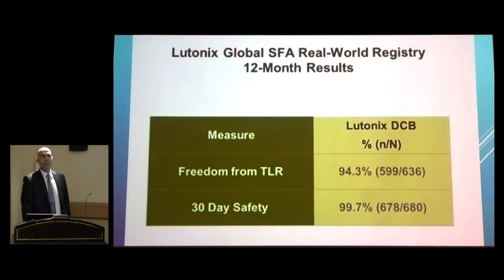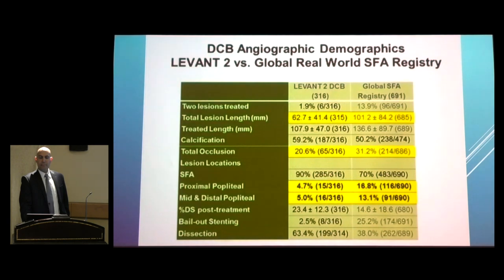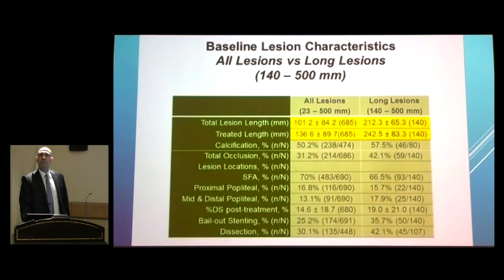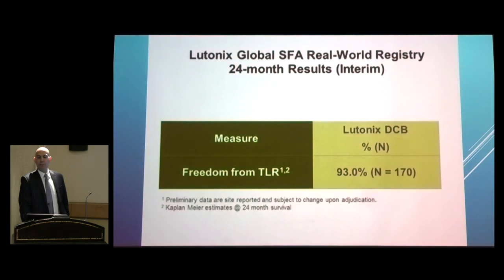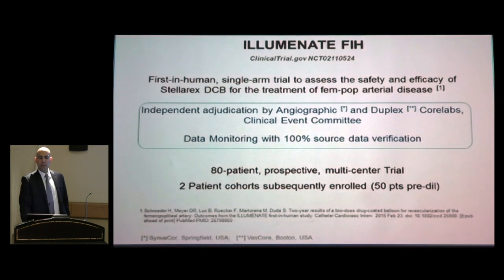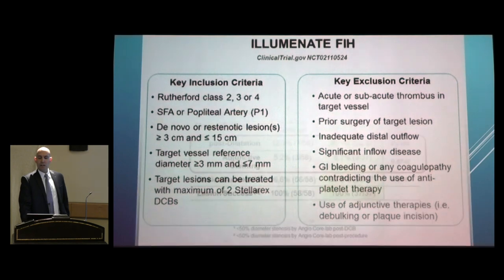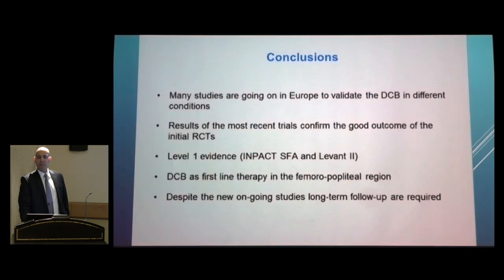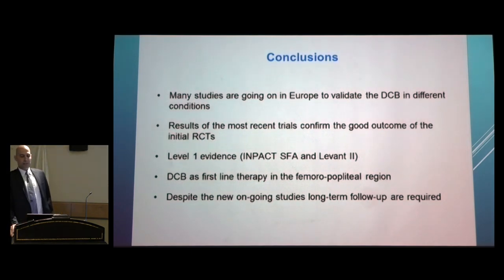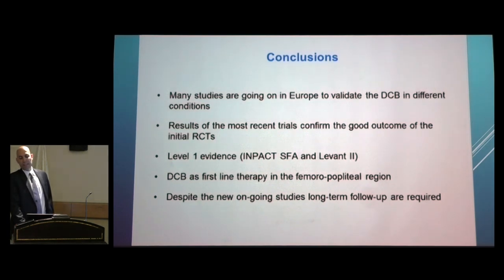All these data show that drug-coated balloon works in the SFA region — in short and long lesions. Primary patency is the most important measure, with wound healing as another metric. Results consistently show roughly 80% two-year patency with drug-coated balloon. The Illuminate trial for Stellarex balloon confirms the same findings. All studies concur that DCB is the first-line therapy in the femoro-popliteal area, with level-one evidence from IMPACT SFA and Levant II. Long-term follow-up studies are still required.